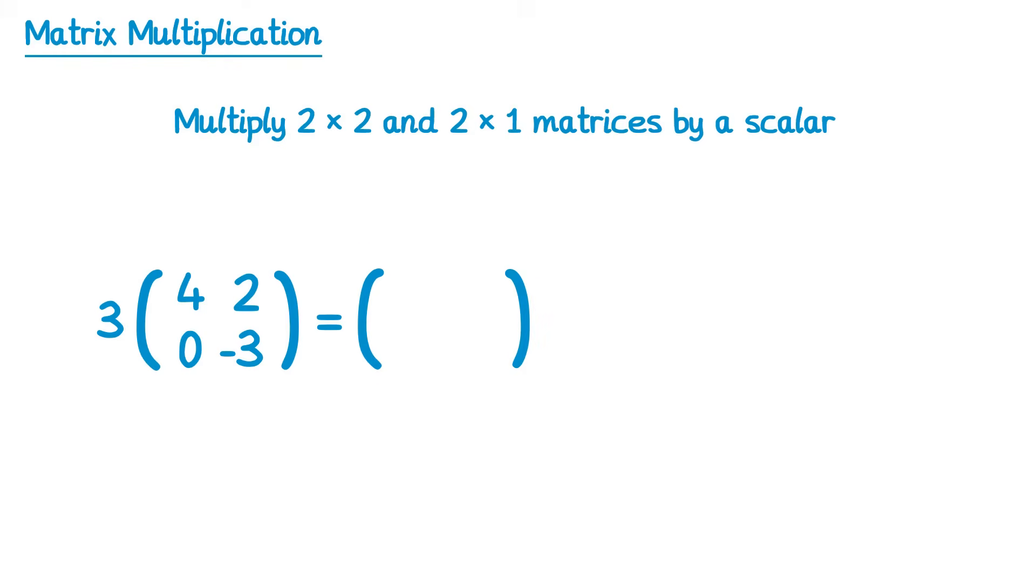Let's have a look at the key points you need to know for your exams. The first point to learn is you need to be able to multiply a 2x2 and a 2x1 matrix by a scalar. A scalar just being a normal number. So if we start with a 2x2 matrix like this and we'll multiply it by a random scalar, let's say the number 3. All you do is draw a matrix which is the same size, so another 2x2 matrix, and you times each of the numbers inside the matrix by the scalar outside. So we'll start by doing 3x4, which gets you 12, 3x2, which gets you 6, 3x0, which is 0, and 3x-3, which is negative 9.